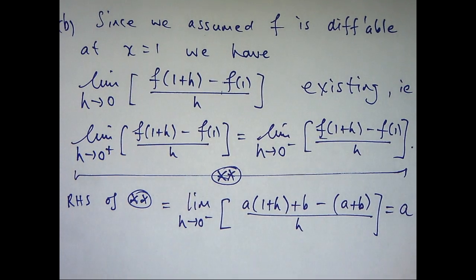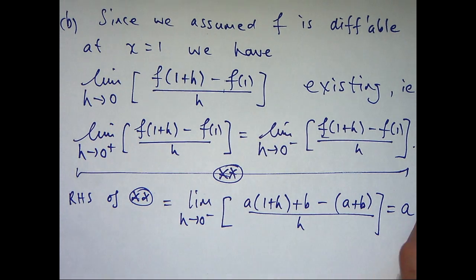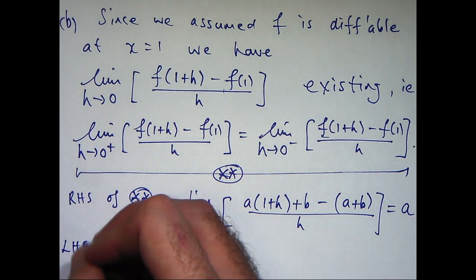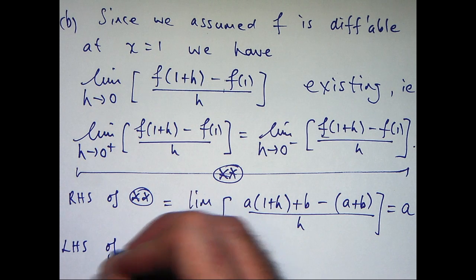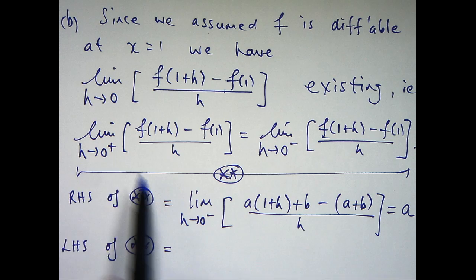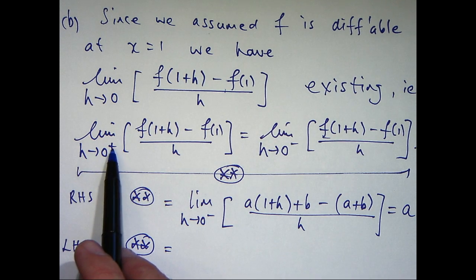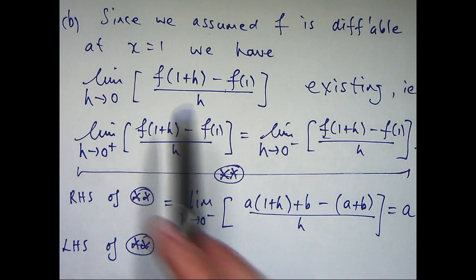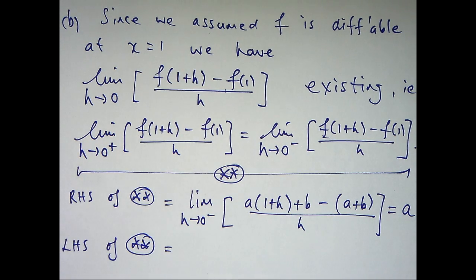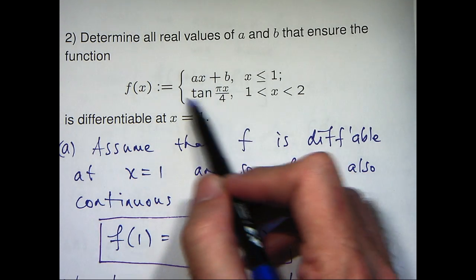Now, the limit here is more involved. So, the left-hand side of double star. h is approaching 0 from the right. So, h must be positive. So, 1 plus h must be greater than 1. So, we'll be using this part of the function here.